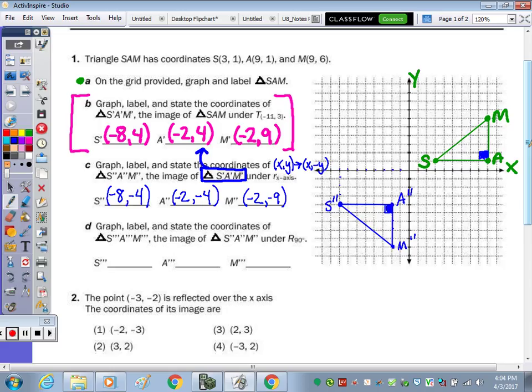Last, it says graph, label, and state the coordinates of S triple prime, A triple prime, M triple prime, the image of S double prime, A double prime, M double prime, which is what's above, under a rotation of 90. So the rule for rotation of 90 from the study card says to take x, y and switch it and negate the first one. So negative y, x. So I'm going to do that first. I'm going to bring the y to the front and negate it. So that negative 4 becomes a positive 4, that negative 4 becomes a positive 4, and that negative 9, when you negate a negative, becomes a positive 9. And then the x comes second. So negative 8, negative 2, negative 2.